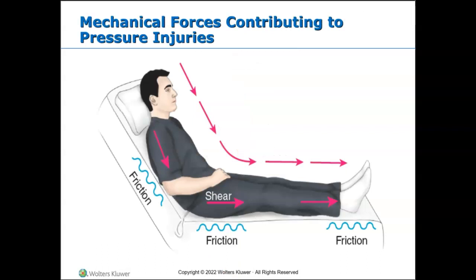Friction injury affects the epidermis — the outermost surface skin is removed by dragging the body part across bed sheets, wheelchair cushions, sliding boards, or due to spasticity causing a body part to rub against something. Friction injury will look red, purple, or irritated, or like a blister with the top layer of skin removed. If the top layer is removed, an opening in the protective barrier allows bacteria, viruses, or other foreign invaders to enter the body.